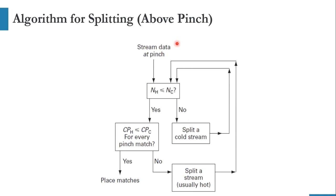Regarding stream splitting rules: we divide the system into two parts — above pinch and below pinch. For above pinch, the rule is that the number of hot streams should be less than or equal to the number of cold streams. For example, if you have two hot streams above pinch, there must be a minimum of two cold streams. If this rule is violated, you need to split a cold stream. Once you divide the cold stream, for example from one into two, the rule is satisfied.